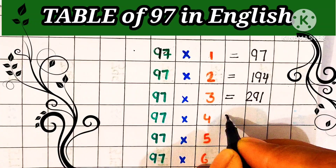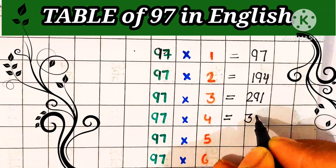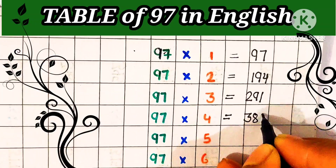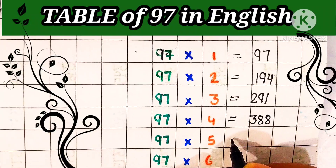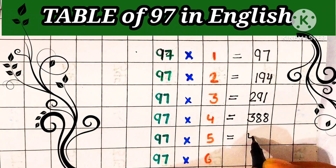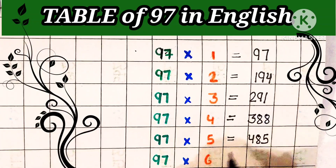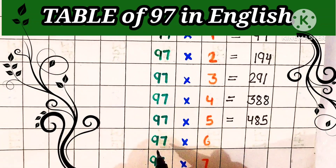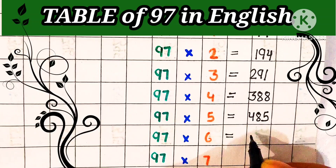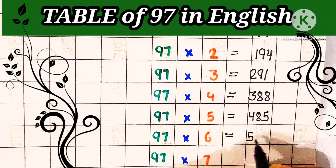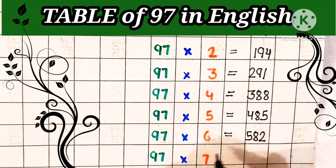97 fours are 388, 97 fives are 485, 97 sixes are 582.